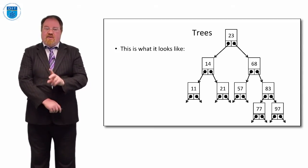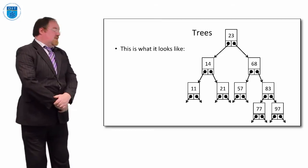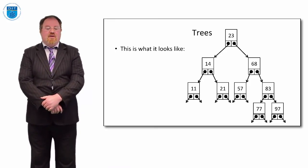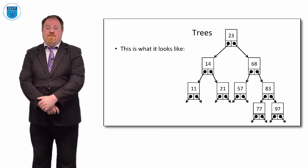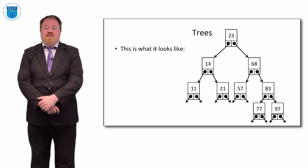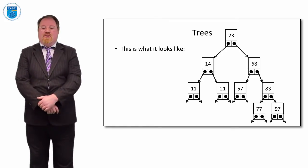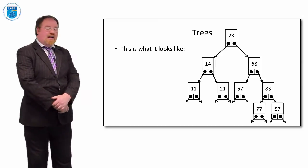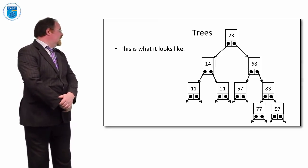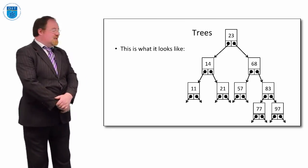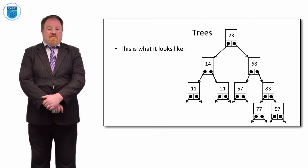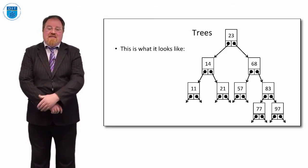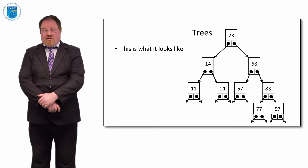In a well-balanced binary tree, each node either points to values on both left and right, or to no values at all, though sometimes only one side has a child. Everything to the left of the root (23) is smaller than 23, and everything to the right is bigger. This ordering holds recursively — to the left of 14 is smaller, to the right bigger, and similarly for 68. This gives us what's called a balanced binary search tree.